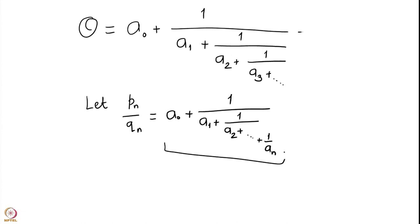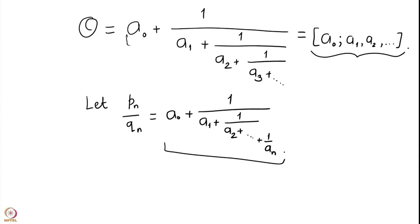We also have a simpler notation to write this continued fraction expansion. We write the first integer, which is the integral part of theta, as a0, put a semicolon after that, and then write all the integers separated by commas. When we write the continued fraction expansion in this way, we want to prove that as n goes to infinity, Pn upon Qn converges to theta. This is what we want to prove.